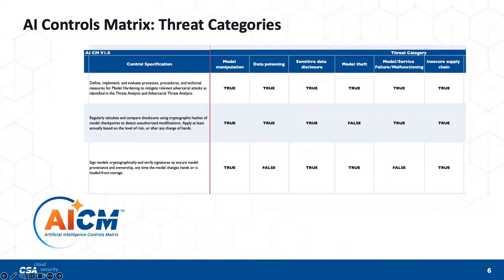Threat categories is another area. If you've been following our AI safety initiative and research, we've done LLM threat taxonomies. What we've tried to do here is help you understand that the threat categories we have will show — if a specific control is not implemented properly — what risk that specific action poses. We've done this across all 243 controls.